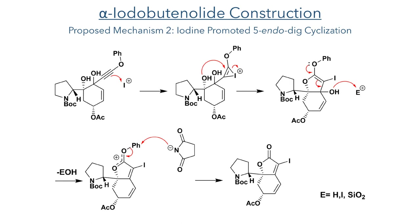The second reaction mechanism proposed is an iodine-promoted 5-endo-dig cyclisation. The first step is activation of the alkyne by the iodonium ion supplied by N-iodosuccinimide. The alpha-hydroxyl group then attacks the activated alkyne to form a 5-membered ring — a 5-endo-dig process favoured by Baldwin's rules of ring closure. The remaining hydroxyl group is then activated with a Lewis acid, which could be a proton, an iodonium ion, or the silica present in the reaction. This is then eliminated, coupled with migration of the double bond and attack of succinimide on the phenyl group to produce the target iodobutenolide. The construction of the iodobutenolide ring completes the synthesis of the electrophilic coupling partner.